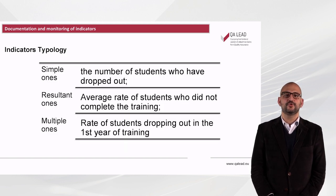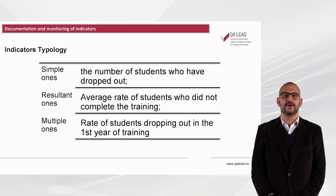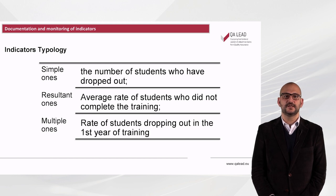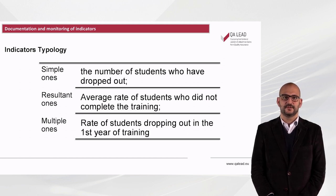We should also mention that there are several types of indicators. The simple ones — for example, the number of students who have dropped out. The resultant ones — for instance, average rates of students who did not complete the training. The multiple ones — for example, rates of students dropping out in the first years of training.